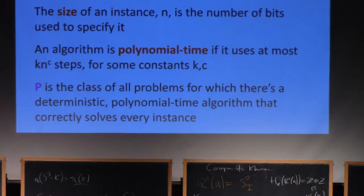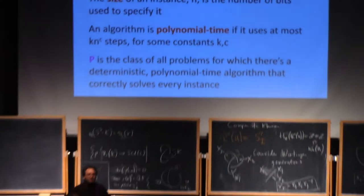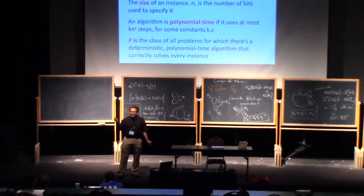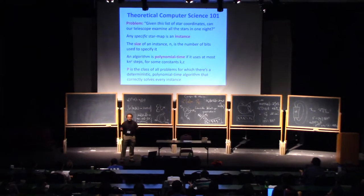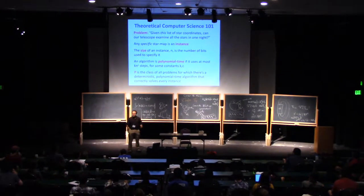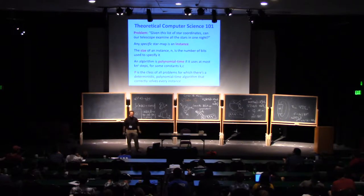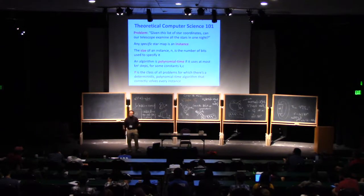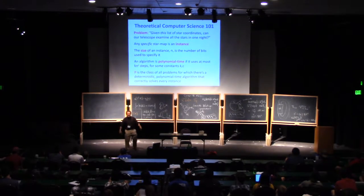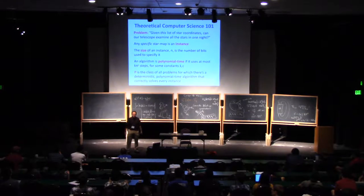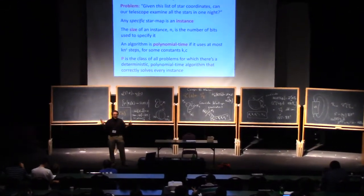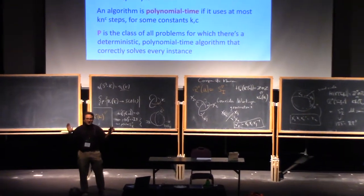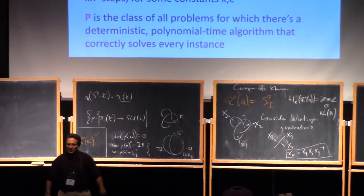Obviously n to the 10,000 is not very efficient in practice, and 1.0000001 to the n would be much better in practice even though it's formally exponential. But this is sort of the first question you could ask — just what is the asymptotic behavior? And it's usually, though not always, pretty well correlated with whether your problem is tractable in practice. We have a universe of classes of problems solvable with different resources, and one of the main tasks of theoretical computer science is to understand these different classes and how they relate to each other.